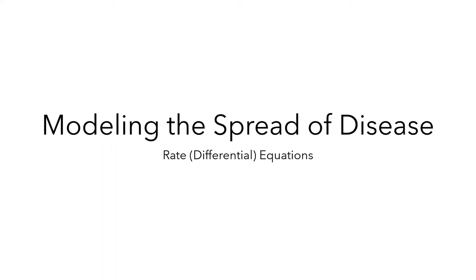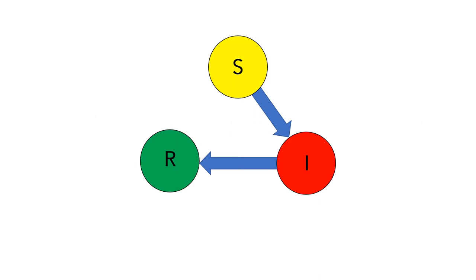In this video, we'll start to make predictions about the spread of a disease by developing the idea of rate equations, which are sometimes called differential equations. In the last video, we developed the idea of splitting the population into three groups, where s represented the number of susceptible people, i represented the number of infected people, and r represented the number of removed people.